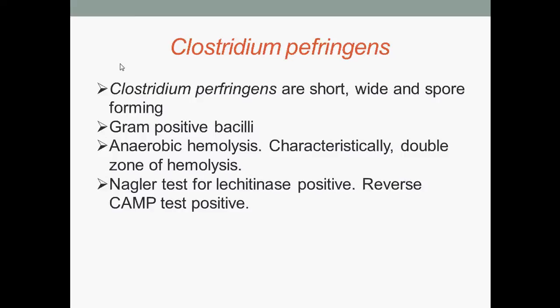The Nagler test is a biochemical test used to identify organisms which liberate phospholipases, for example lecithinases, as in the case of Clostridium perfringens. The alpha toxin of Clostridium perfringens has phospholipase activity, and hence when grown on a medium containing egg yolk phospholipid, the organism can break down this insoluble triglyceride.